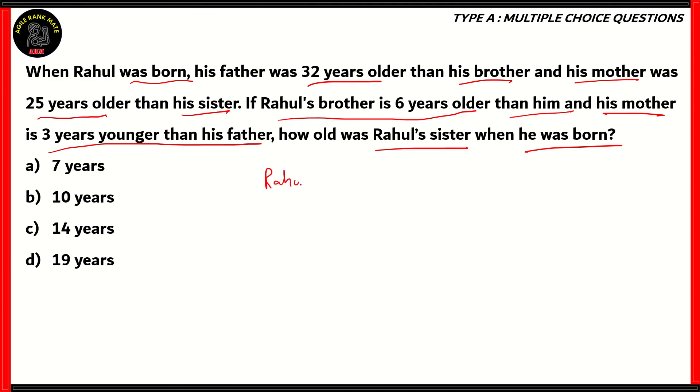So how is that? Let's consider Rahul when he was born. At that time, he would be 0 years old. He was just born. That means his brother, who is technically 6 years older than him, would be at the age of 6. Now, we know that his father was 32 years older than his brother at that time. So we can find out the age of the father by adding 6 to 32. So 32 plus 6 gives you 38.